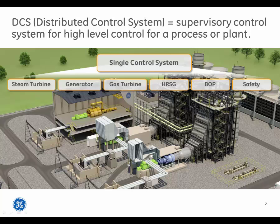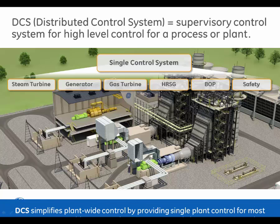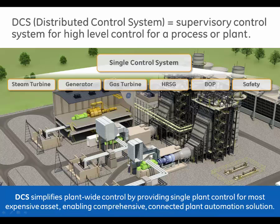Some typical power plant assets are shown here, along with a control system that may perform supervisory control for the entire system. A single control system architecture simplifies plant-wide control by providing a single plant control for the most expensive assets, enabling a comprehensive, connected plant automation solution.